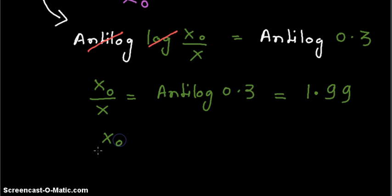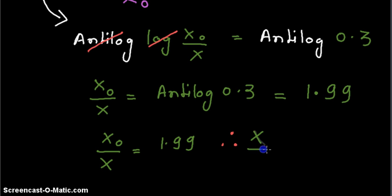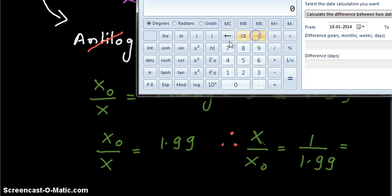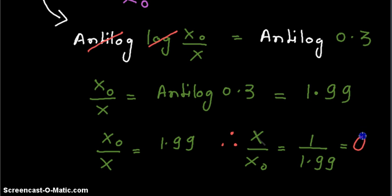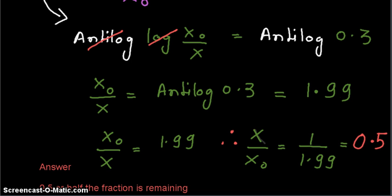So x₀ / x = 1.99. Therefore, x / x₀ = 1 / 1.99 ≈ 0.5. The answer is 0.5 — half the fraction of uranium is remaining at the end of 5 billion years.